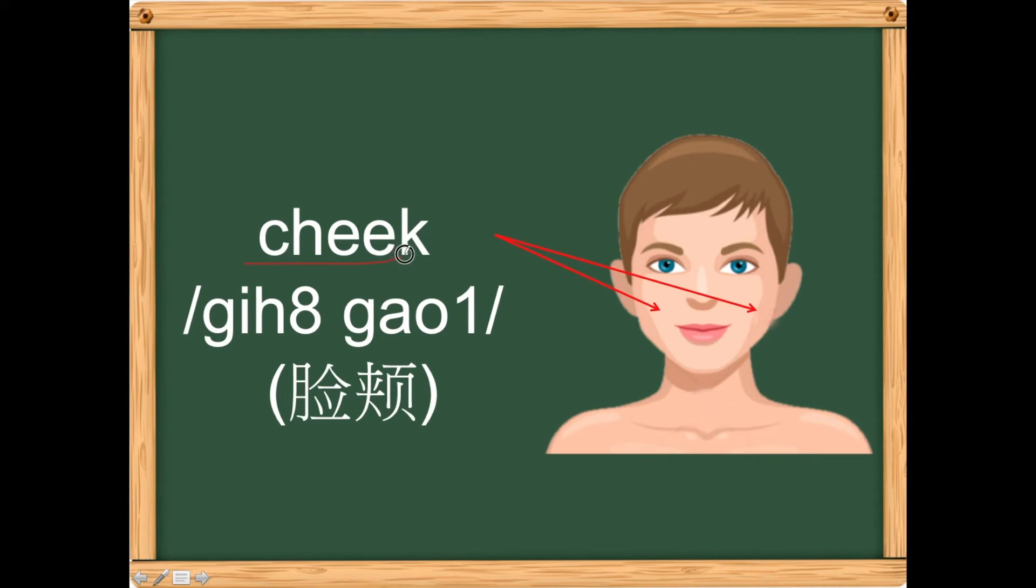The cheek, the area here and here, is called 'kì cao.'